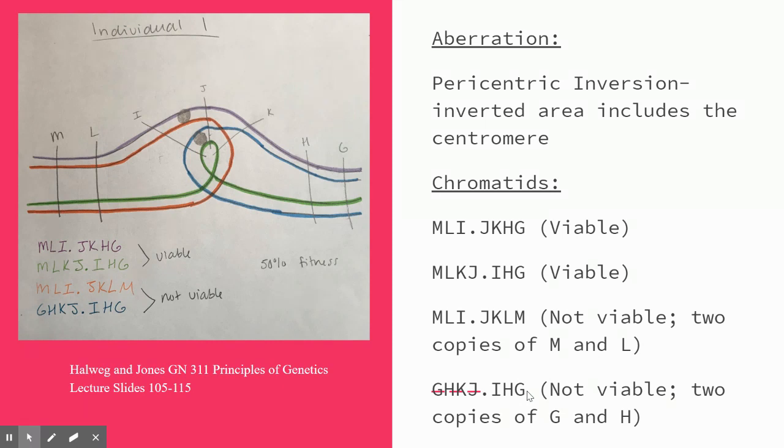Here, only two chromatids are viable. The other chromatids have too many copies of one or more loci. Therefore, they are not viable.